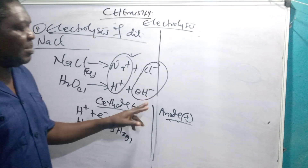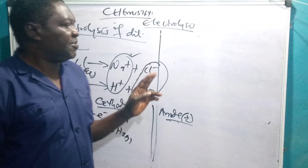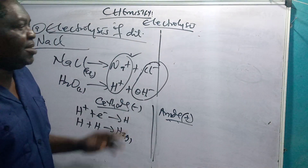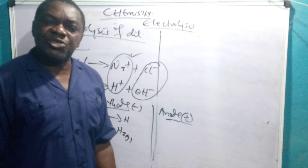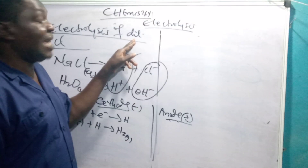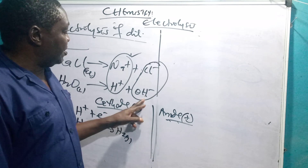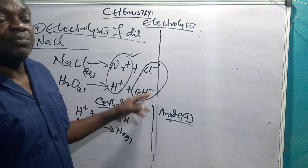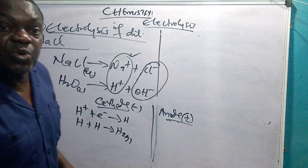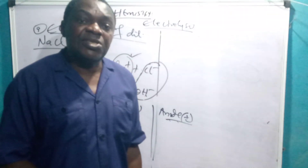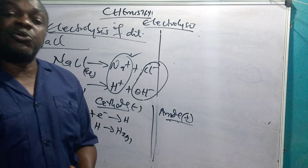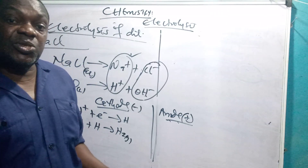Because the solution is dilute, the concentration of chloride ions is not sufficient for discharge. There are three factors of electrolysis: first, the concentration of ions in the electrolyte; second, the nature of the electrode; and third, the position of the ions in the electrochemical series. In this case, concentration is the key factor. A concentrated solution contains much solute and very little water, while a dilute solution contains much water and very little of the dissolved substance.